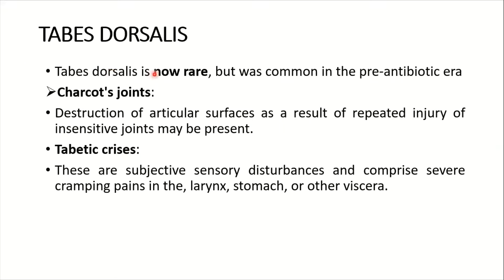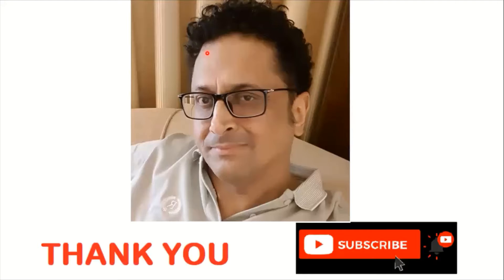Tabes Dorsalis is now rare but was very common in the pre-antibiotic era. Charcot joints — destruction of articular surfaces as a result of repeated injury to insensitive joints — may be present. Tabetic crisis refers to subjective sensory disturbances comprising severe cramping pains in the larynx, stomach, or other viscera.